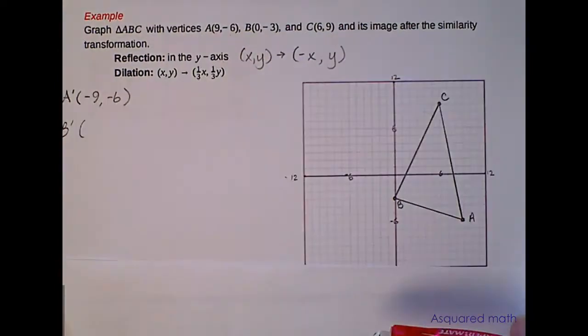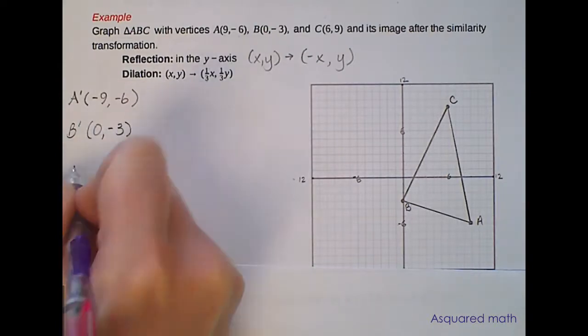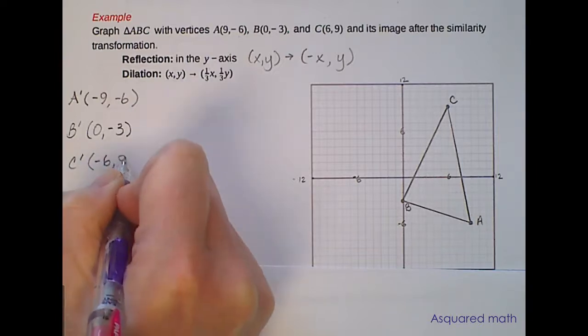C prime, take the opposite sign of positive 6 so that becomes -6 and we keep our 9.